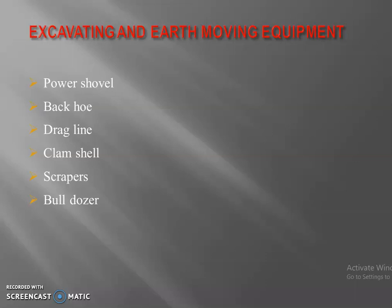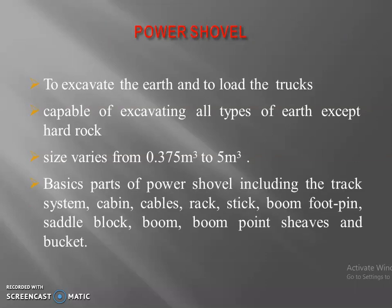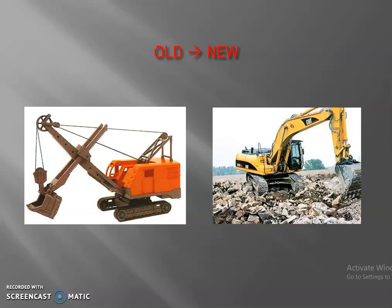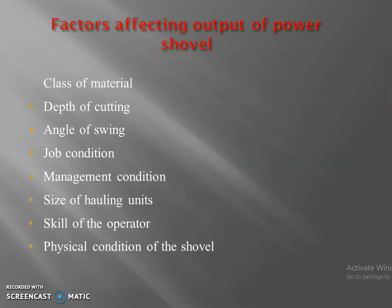These are some of the excavating equipments: power shovel, backhoe, dragline, clamshell, scrapers and bulldozers. Power shovel is used to excavate the earth and to load the truck. Its excavating capacity varies in size from 0.375 meter cube to 5 meter cube. It can be used for harder rock. The parts of the power shovel are shown here — this is the old power shovel and this is the newer one. You can see that the harder strata can be excavated.